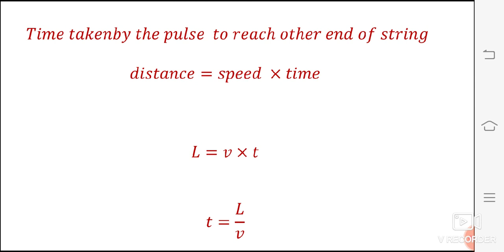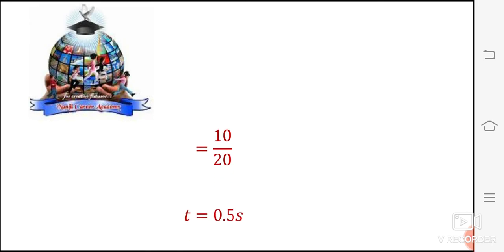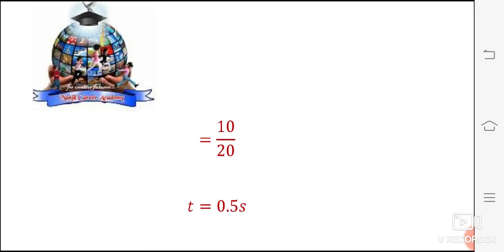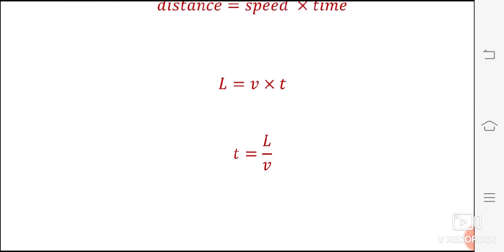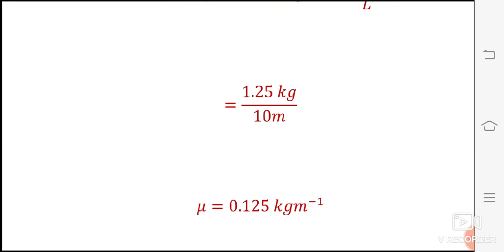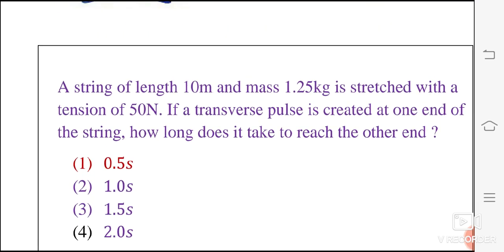So we need to calculate the time. So time T is equal to L by V. So T is equal to 10 divided by 20, which is equal to 1 by 2. So 1 by 2 is equal to 0.5 second. So T is equal to 0.5 second. So option first option.